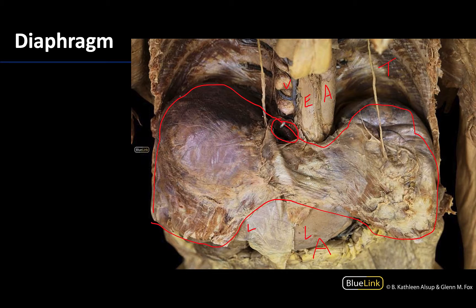It's been opened a little bit bigger than it would appear during life, but that's where the caval opening would be. The esophageal hiatus would be in this general region here to allow for the esophagus to pass through, and then you would have the aortic hiatus that is going to allow for the descending aorta to move through into the abdomen.